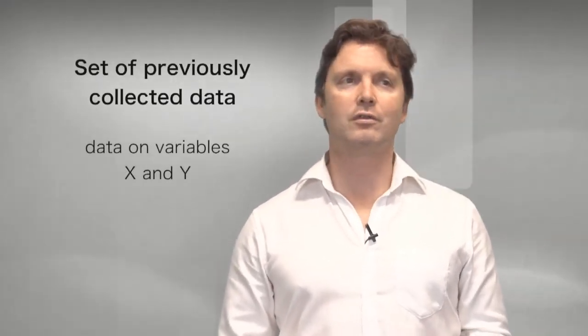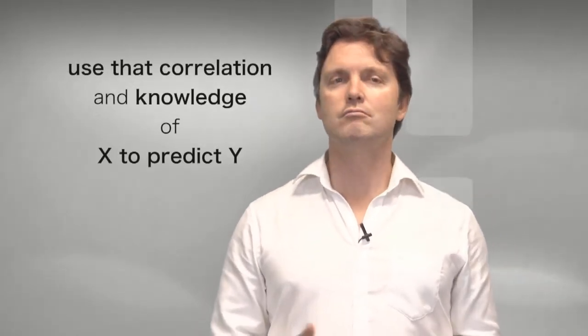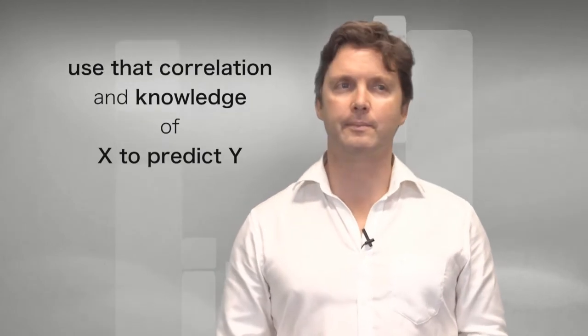Now the basic idea is that you use a set of previously collected data, such as data on variables x and y, and calculate how correlated these variables are with one another. And then use that correlation and the knowledge of x to predict y. To do that, we need a regression line.